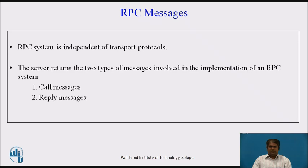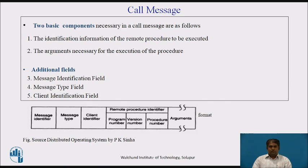An RPC protocol is independent of transport protocols, which means that RPC does not care how a message is passed from one process to another. Therefore, an RPC protocol deals only with the specification and interpretation of these two types of messages. Since a call message is used to request execution of a particular remote procedure, two basic fields are necessary: the identification information of the remote procedure to be executed, and the arguments necessary for the execution of the procedure.